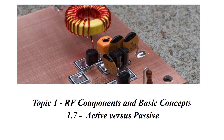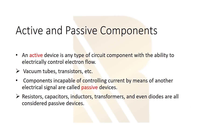Let's start with active components. An active device is any type of circuit component with the ability to electrically control current flow. We can increase or decrease the current; examples include vacuum tubes and transistors.